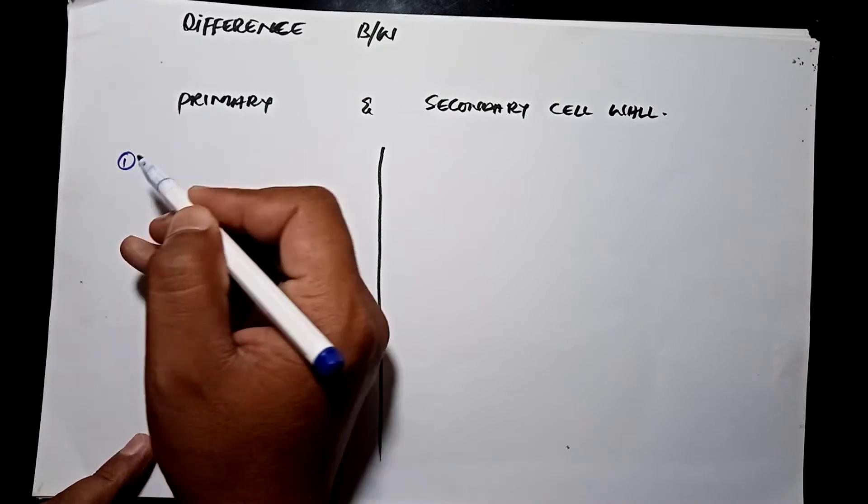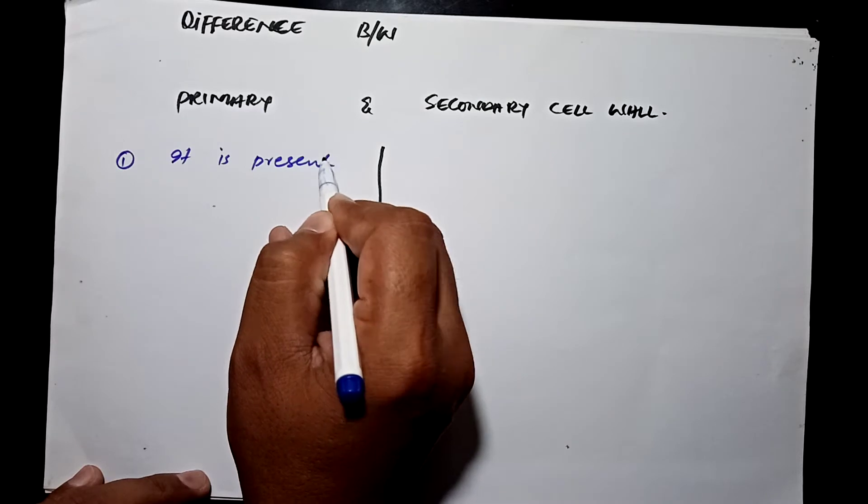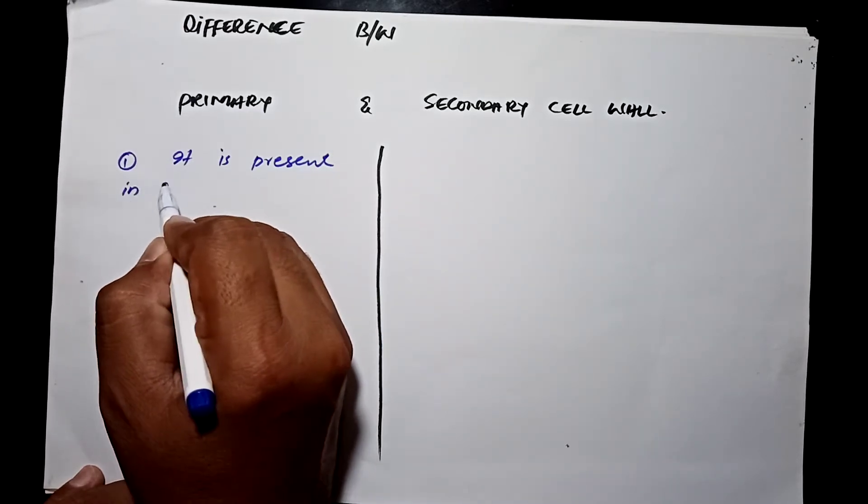Primary cell wall is present in all cells.